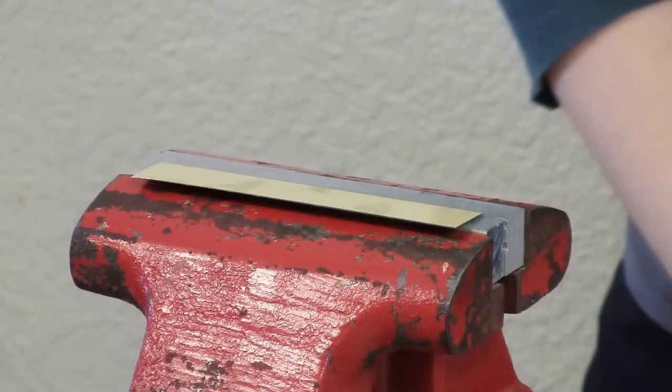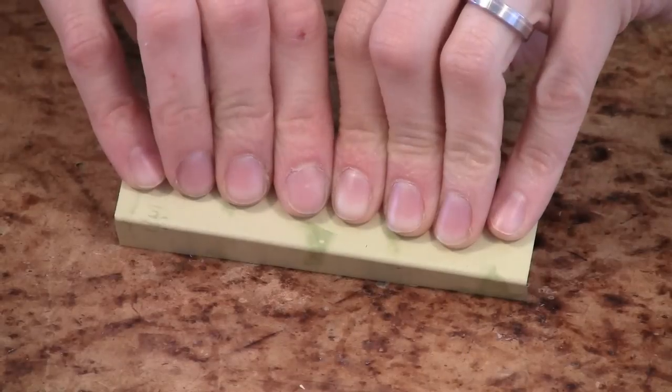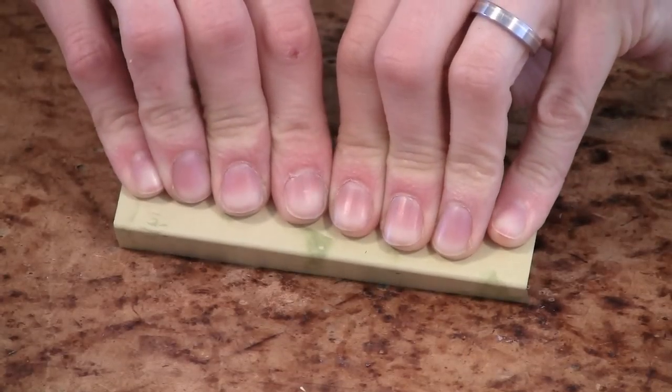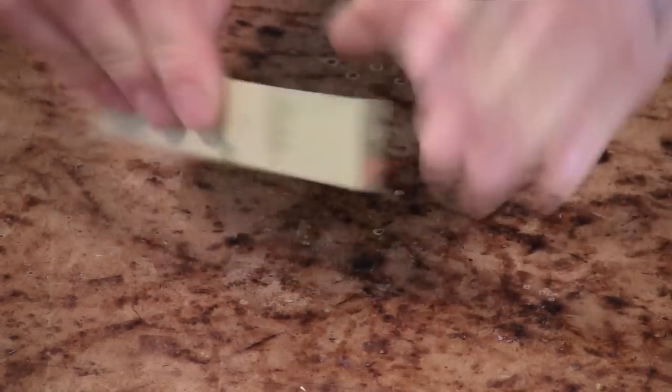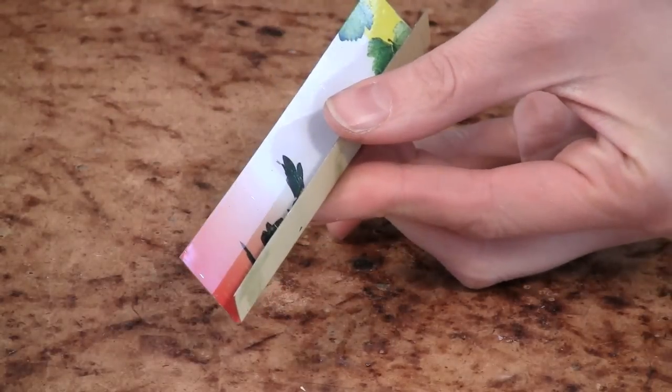Then, remove the work from the vise and press the folded part against your work surface, applying even pressure along its length. In this way, you can make a fold of any angle, up to 180 degrees.